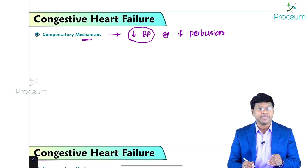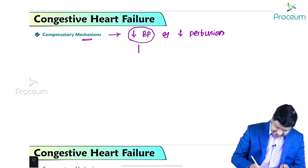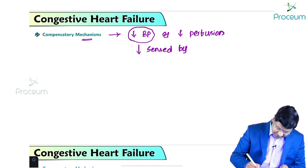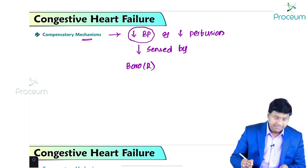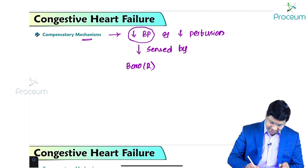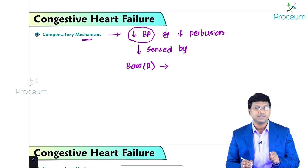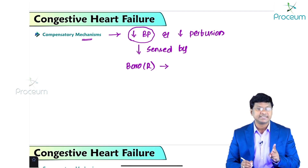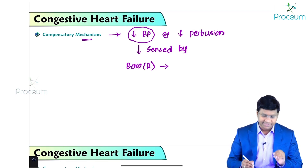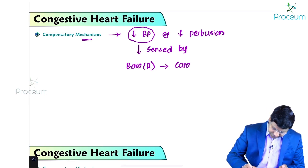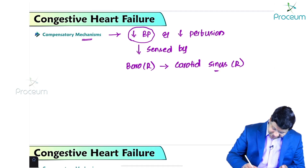This decreased blood pressure is sensed by the baroreceptors. These baroreceptors include the carotid sinus receptors and the receptors in the aortic arch.